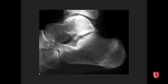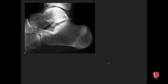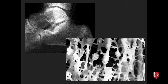Calcaneal stress fractures may not always be visible on plain film; on radiograph a band of sclerosis may be seen, but at diagnosis they are often radiographically occult. The reason is that trabecular micro fractures become visible only once enough callus forms to summate radiodensity. Negative radiographs do not exclude a stress injury.